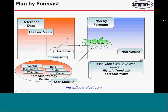In SAP, there is a module called SOP — Sales and Operations Planning. They create a lot of forecast profiles, which they call forecast strategies. These include things like moving average price, weighted averages, and smoothing techniques using mathematical models like alpha, beta, and gamma.